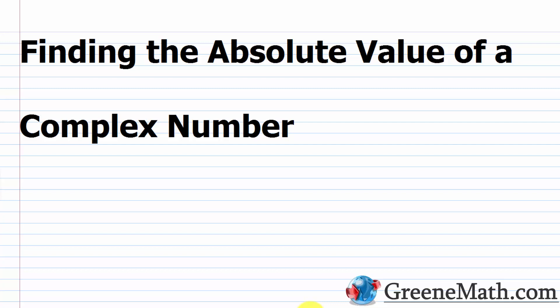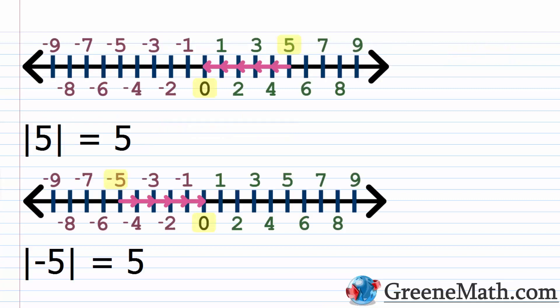In this lesson, we want to talk about finding the absolute value of a complex number. At this point in our course, we should fully understand the concept of taking the absolute value of some real number. The absolute value of a number is just a measure of the distance from zero to that number on the number line. If we take the absolute value of zero, it's just zero. If we take the absolute value of a positive number, it's just the number itself. If we take the absolute value of a negative number, we just take the opposite of the number — make it positive.